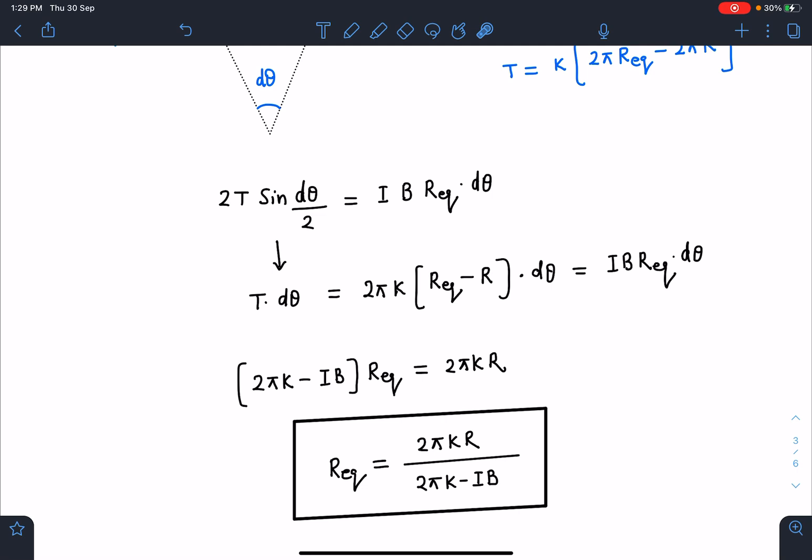So you can see here if 2πK and IB are equal, then R_equilibrium will come at infinity. So this ring will keep expanding till infinity if this situation is met. We will take 2πK greater than IB in order to obtain the oscillations. Let's see that possibility in time period expression as well.